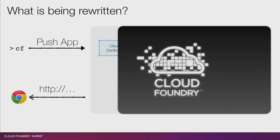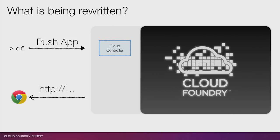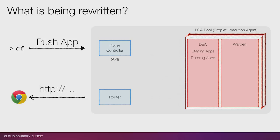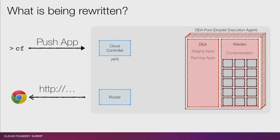Let's peel back and look at what's going on inside Cloud Foundry. The first thing you see is the Cloud Controller, which provides the API that the command line client talks to. You also see the router — the component taking in all of that Internet traffic and routing it to your apps. But if you pull back even further and look at how the sausage is made, you'll find the DEA pool. These are the droplet execution agents that actually run your app. The DEA itself is responsible for staging and running your apps, and you also have Warden, which is responsible for containerizing your apps — keeping one app separate from another.